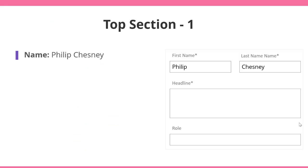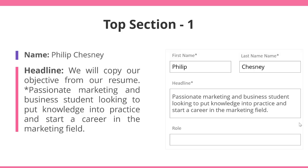Top section — Name: you can add your name here. Headline: we will copy our objective from our resume. Basically, this is what you're looking for. For example: 'passionate marketing and business student looking to put knowledge into practice and start a career in the marketing field.' Obviously, if you have something else you'd like to add as your headline, by all means — this is just an example borrowed from our resume.